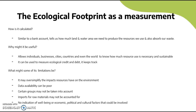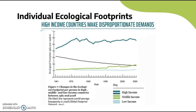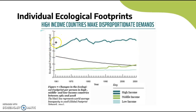Looking at trends at the individual level: high-income countries make disproportionate demands. High-income countries have overall very large ecological footprints — around 4.2 to 6 global hectares — which is very high overall.